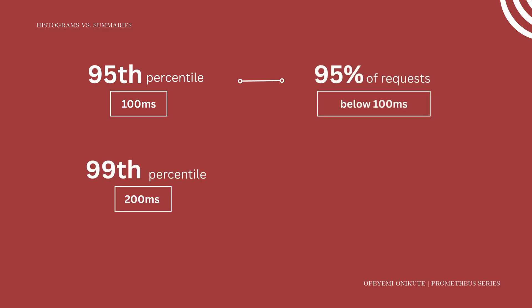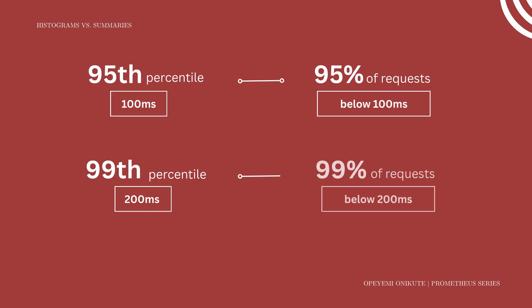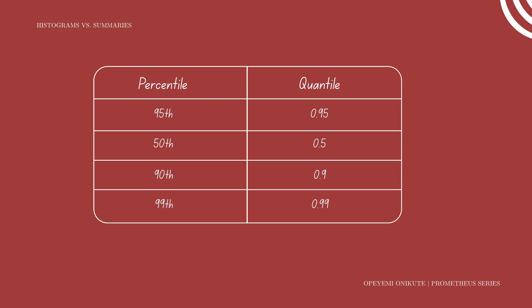If your 99th percentile is 200 milliseconds, 99% of your requests are less than 200 milliseconds, and your worst 1% of requests are more than 200 milliseconds. You can also refer to percentiles as quantiles — the 0.95 quantile is the 95th percentile and the 0.5 quantile is the 50th percentile.